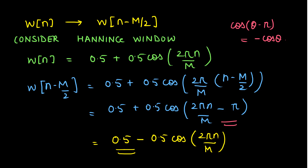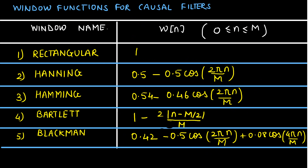This is the equation for the Hanning window to obtain a causal filter. There are changes in the expressions of other windows too. For causal filters: the rectangular window has no change; the Hanning window is 0.5 minus 0.5 cosine(2 pi n / M); the Hamming window is 0.54 minus 0.46 cosine(2 pi n / M); the Bartlett window is 1 minus 2 times |n minus M/2| upon M; and the Blackman window is 0.42 minus 0.5 cosine(2 pi n / M) plus 0.08 cosine(4 pi n / M), where n varies from 0 to M.